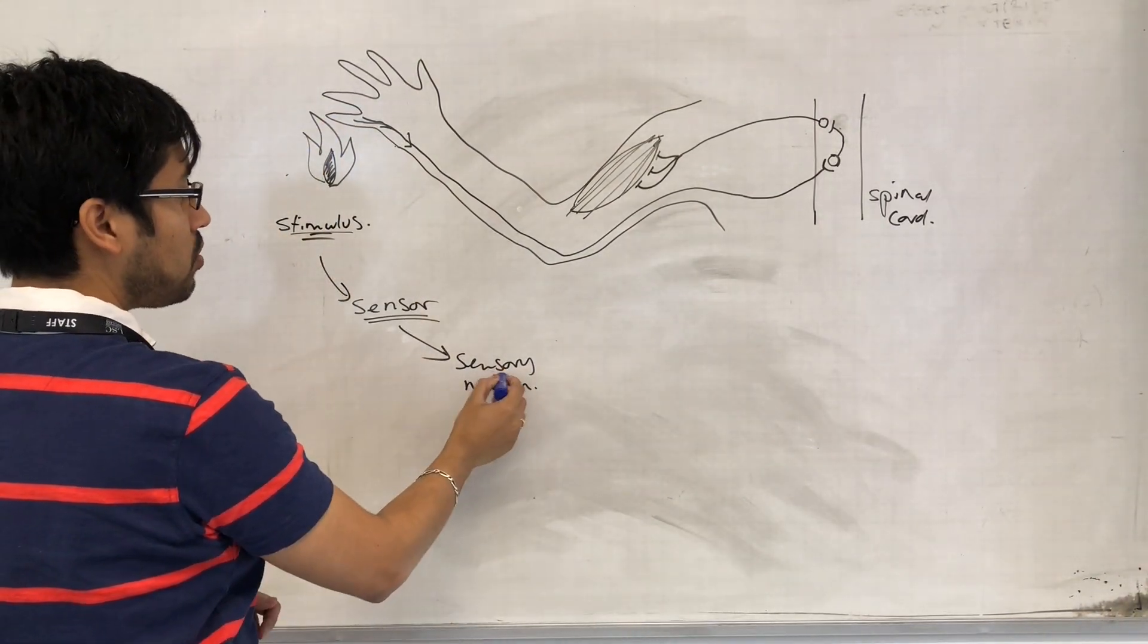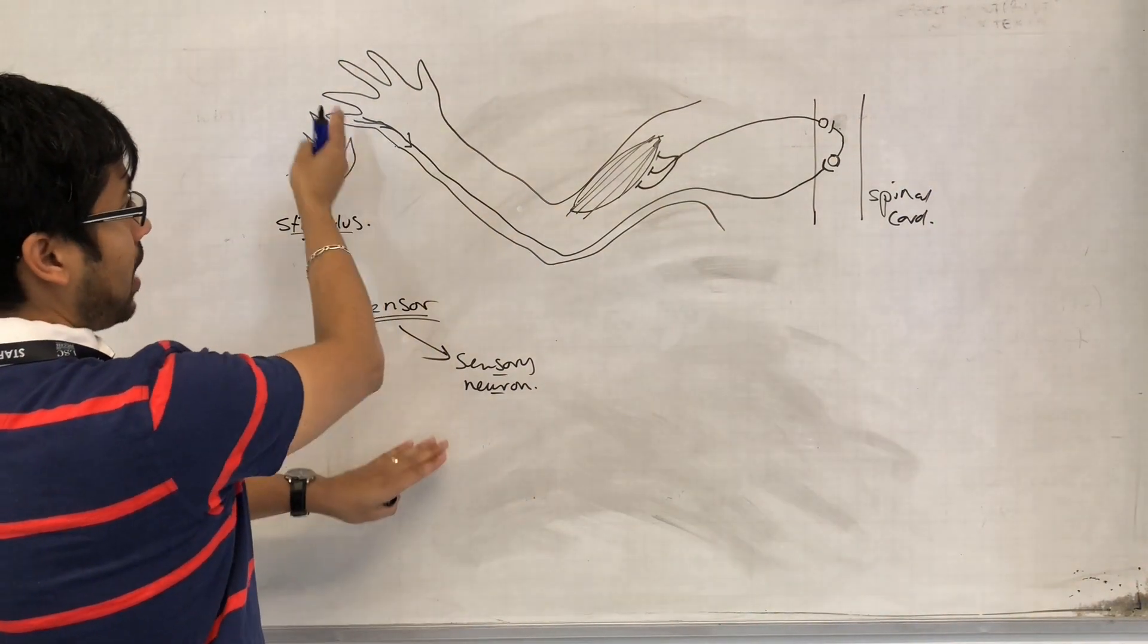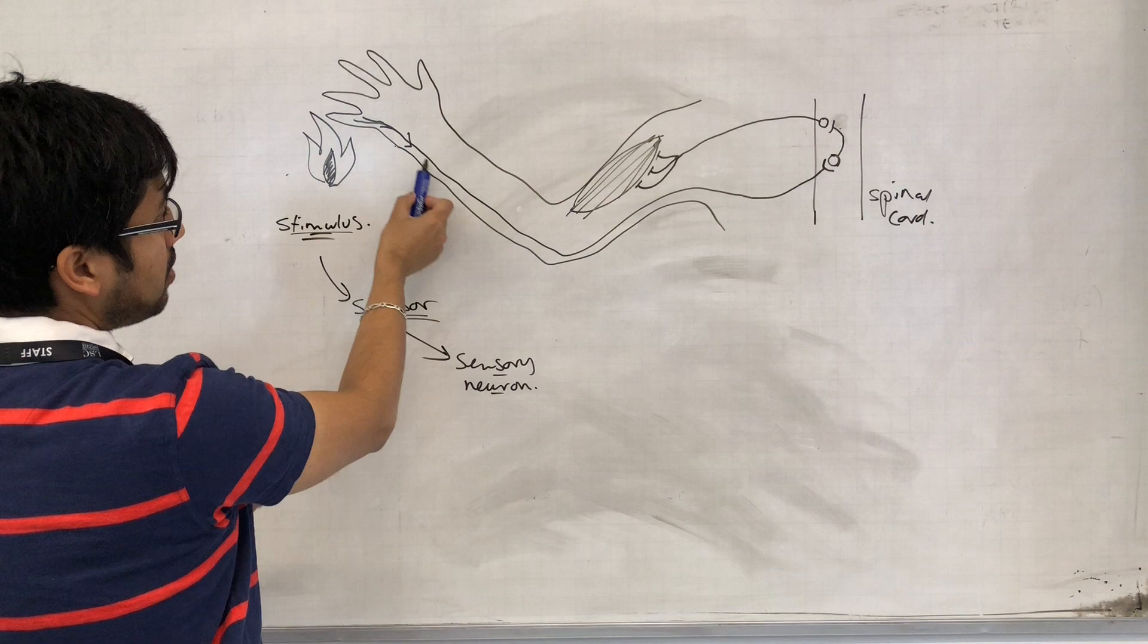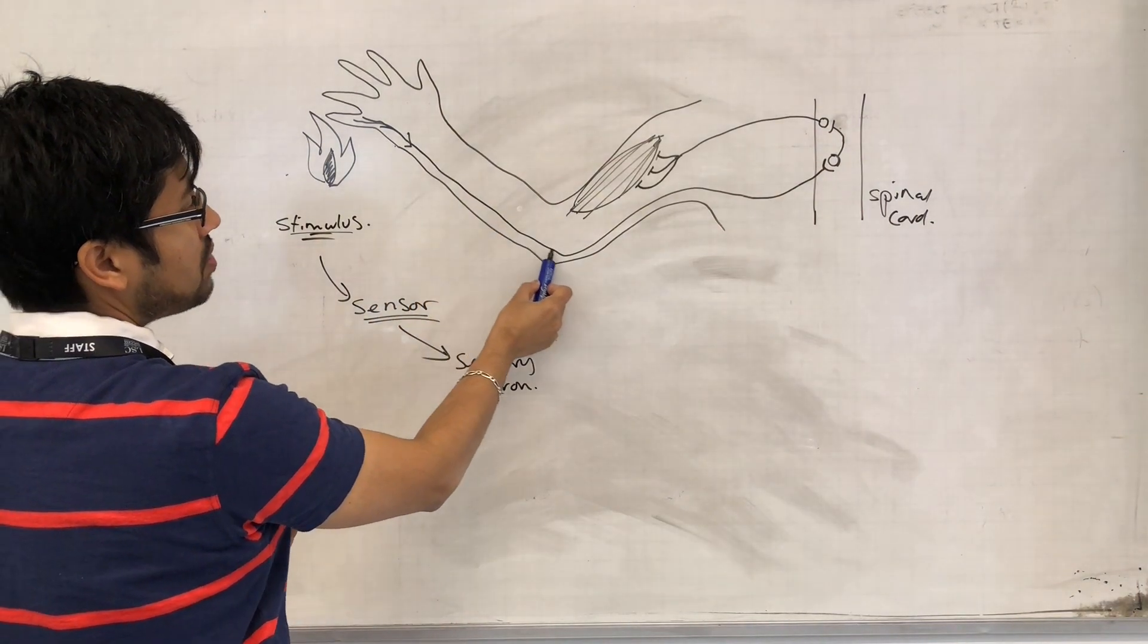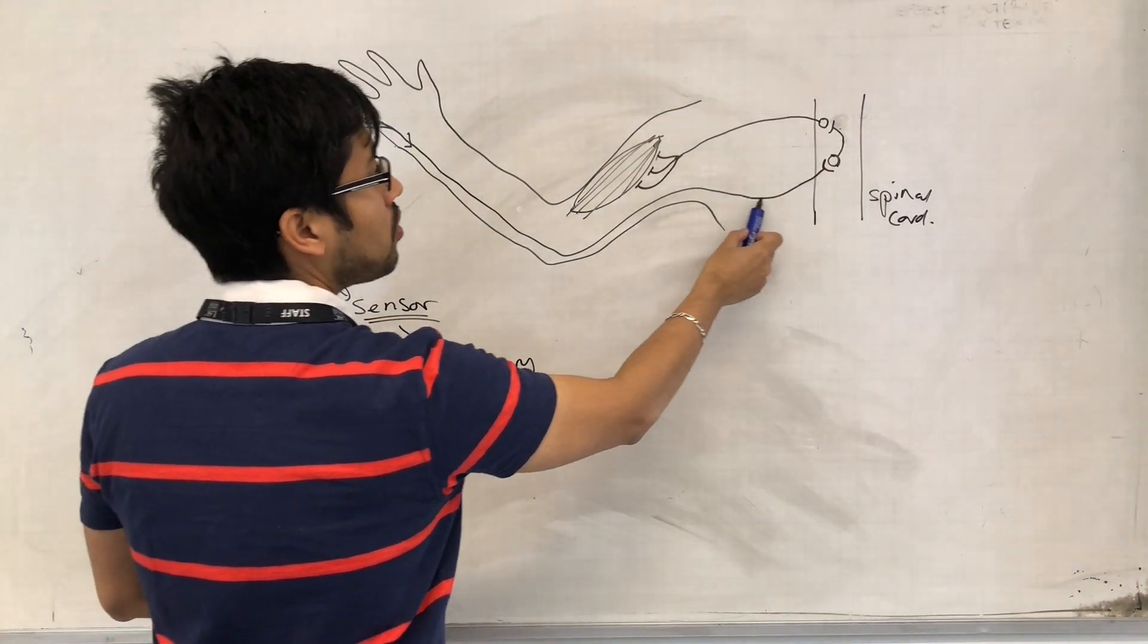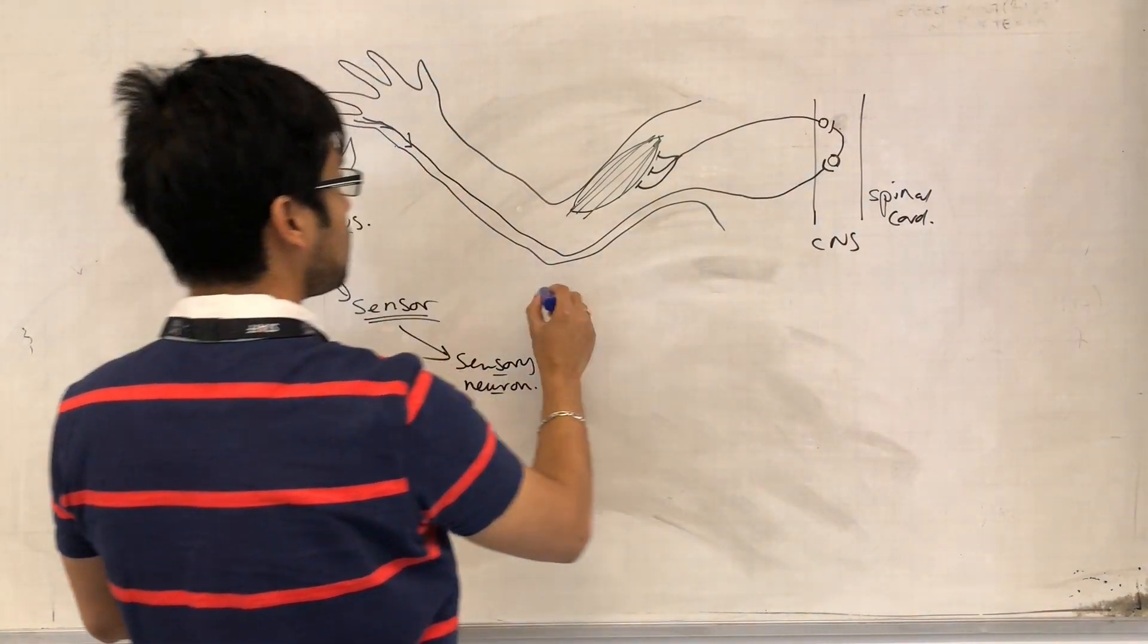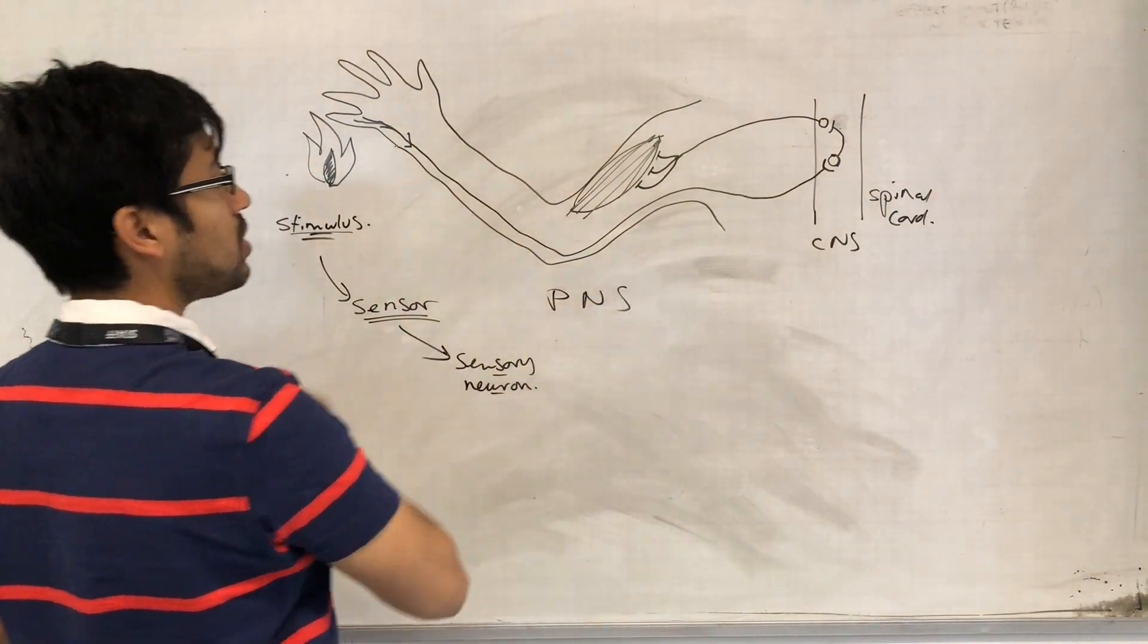The sensory neuron has impulses that get generated by the sensor. So the impulses are now passing along down this sensory neuron all the way to the spinal cord, the central nervous system right here. So everything here is peripheral nervous system.